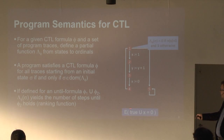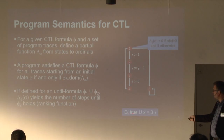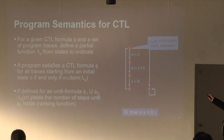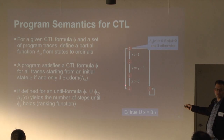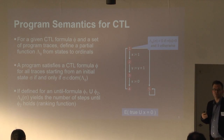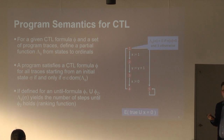For an existential formula — there exists a future in which x equals 0 holds eventually — lambda also gives back 0 when x is initially 0, since the formula holds immediately. In all other cases it is also defined, because in all other cases there exists an execution that after three steps reaches a state where x is definitely going to be 0. So you see how we count the number of steps, giving us this ranking function.